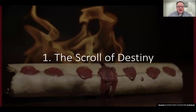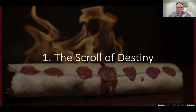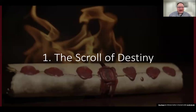We are introduced here to the scroll of destiny. In verse 1, we see it is in the right hand of him who sits on the throne. Just a quick recap: chapter 4 is a glimpse of heaven where John has a heavenly vision. The very first thing he sees is the throne and the one seated on it — the glory of God in heaven, and the worship of God in heaven.